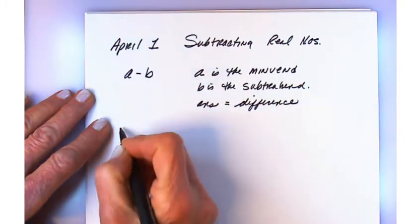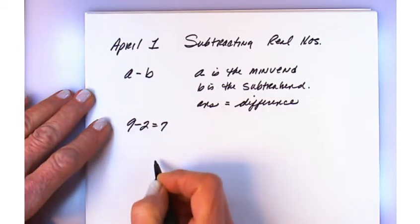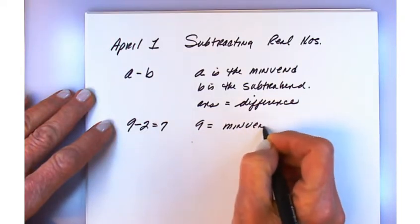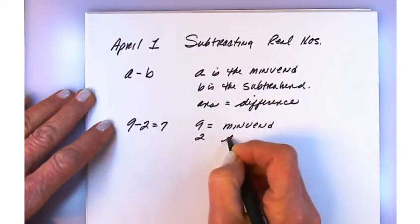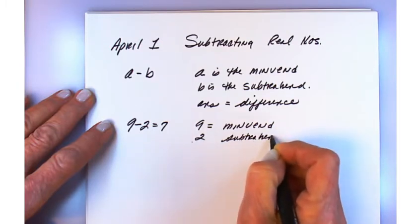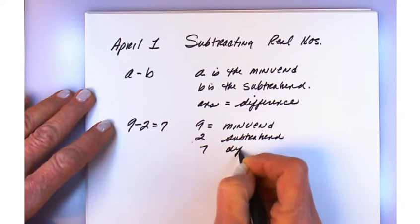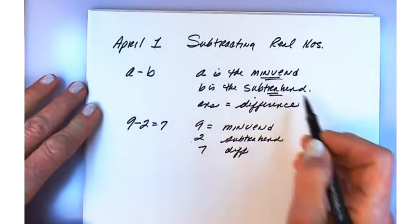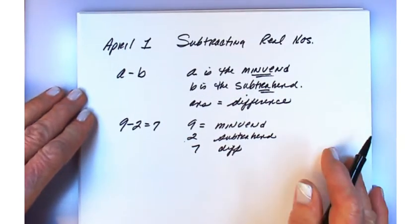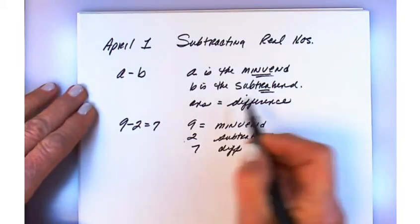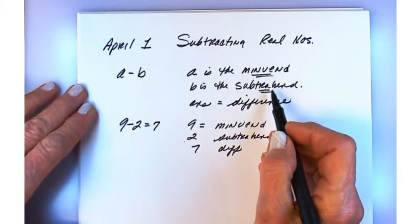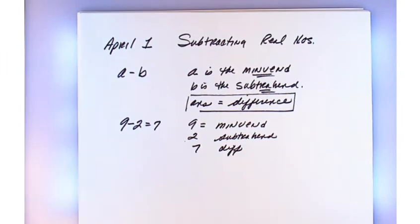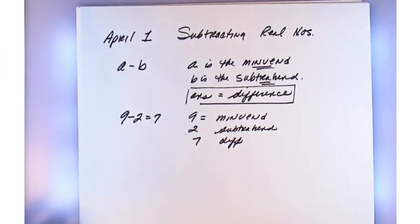For example, 9 minus 2 equals 7: nine is the minuend, two is the subtrahend, and seven is the difference. You don't really need to know the words minuend and subtrahend — no instructor will ask you those. We mention them just for reference. You do know that the answer is the difference, since we covered that at the very beginning of the term.